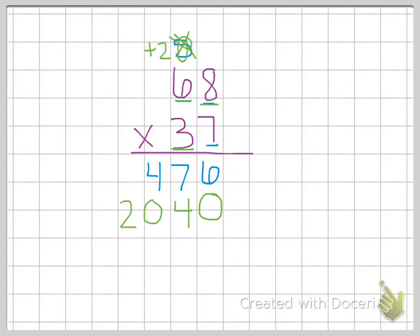And then the last step is to add up my number. So I'm going to add those two up. So six plus zero is six. Seven plus four is eleven. One plus four plus zero is five. And zero plus two is two. And add our comma. So sixty-eight times thirty-seven equals two thousand five hundred and sixteen.